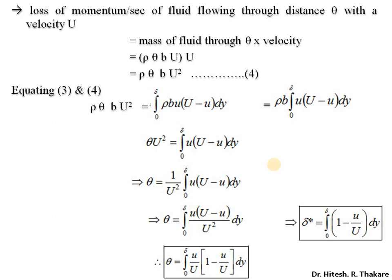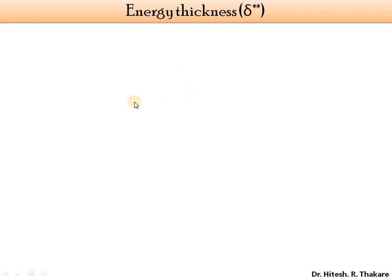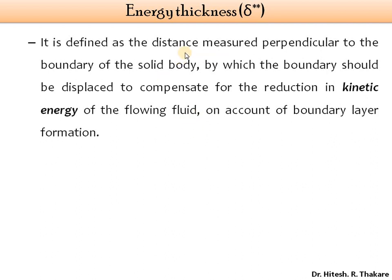Using that similar approach, we will now derive the expression for energy thickness. Remember, displacement thickness told us about loss of mass flow rate, and momentum thickness told us about loss of momentum. Similarly, energy thickness will help us understand in mathematical form the loss of energy because of the presence of the boundary layer. Energy thickness is the distance measured perpendicular to the boundary of the solid body by which the boundary should be displaced to compensate for the reduction in kinetic energy of the flowing fluid. This quantity is indicated by delta double star.